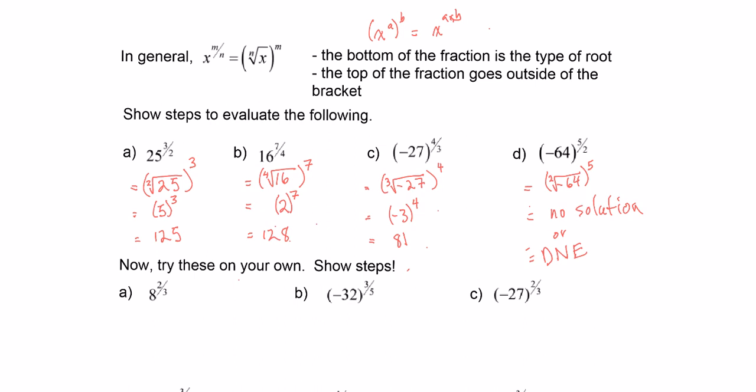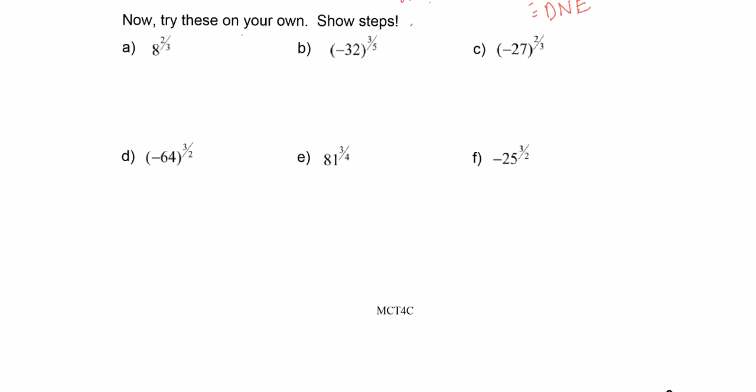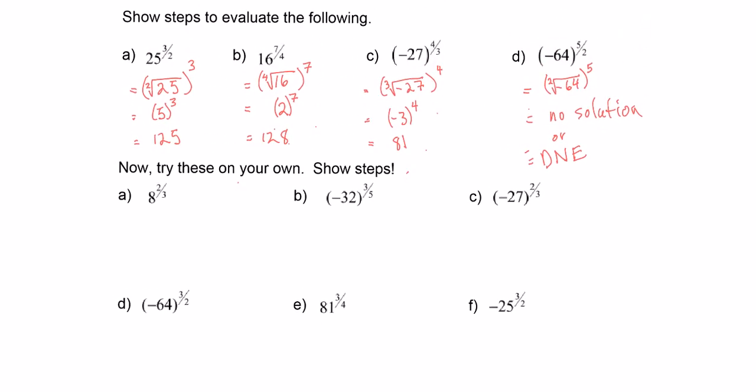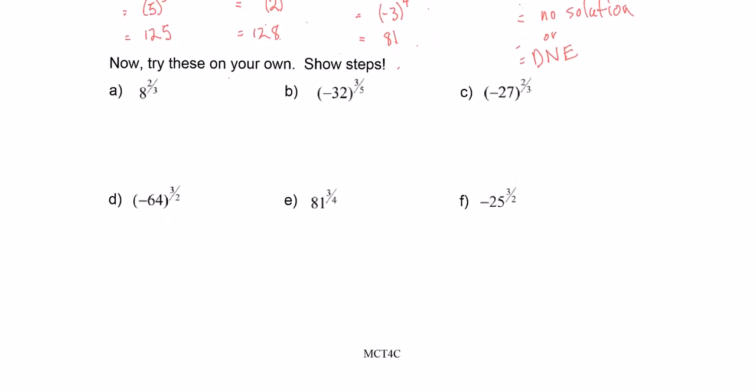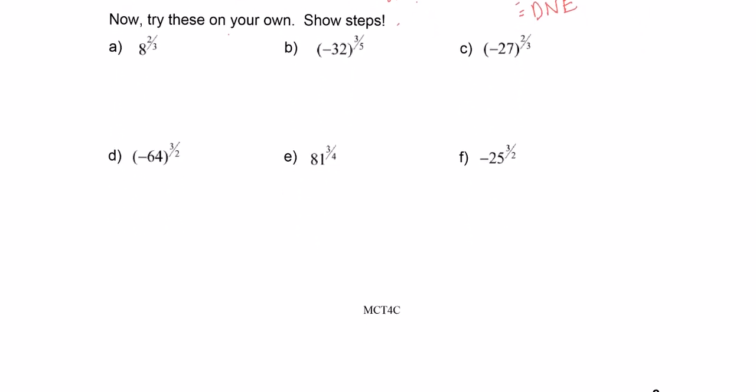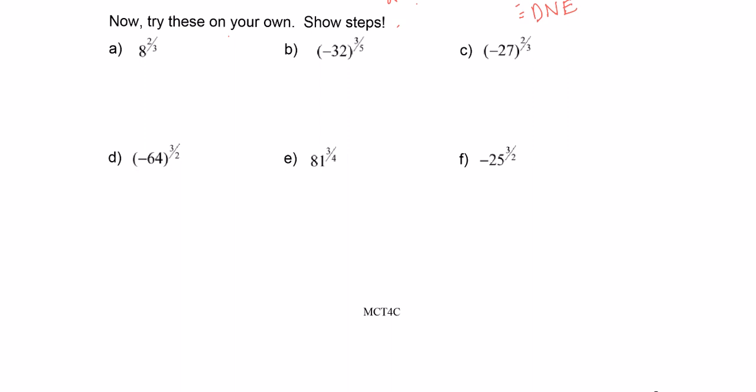Here are the problems I want you to work on today. Show all the steps like we did before and do all six problems on your own. The big trick for the last one is to leave the negative sign alone and just work with the radical expression in the bracket.